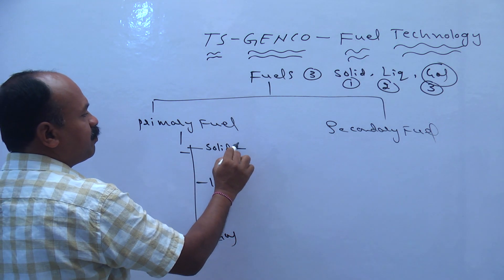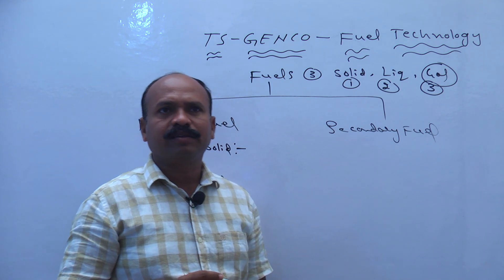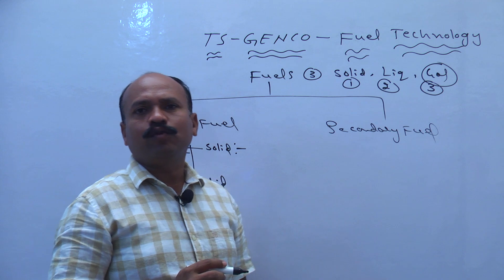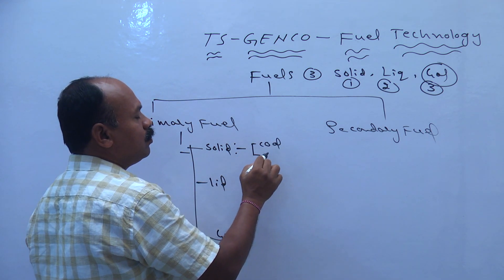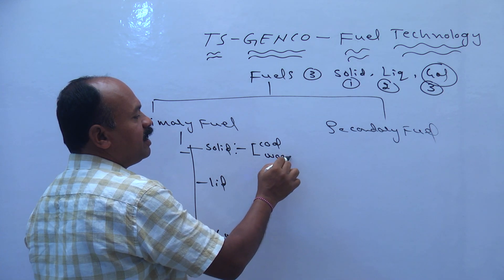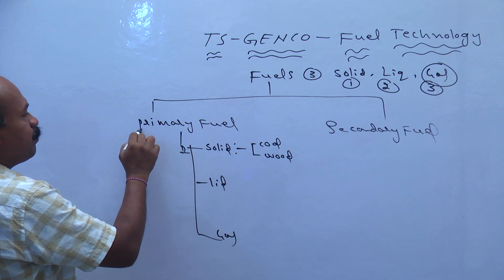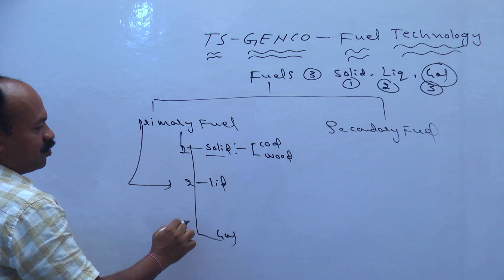What is the example of primary fuel? The solid fuel: charcoal, coal, and wood. Coal or wood. These three types are converting the primary fuels into solid fuels. Next one liquid fuels, next to gas fuels.